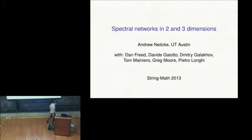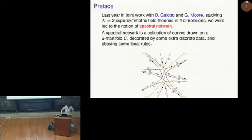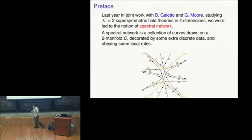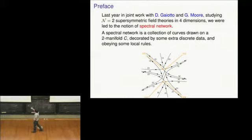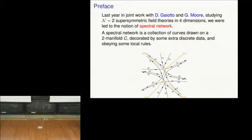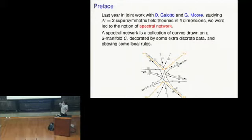So what is the subject? Last year, in joint work originally with Davide Giotto and Greg Moore, as part of a long-running collaboration, we've been studying N equals two supersymmetric field theories in four dimensions. In the process of that study — a question from physics — it led to some mathematical geometric construction, which is this notion of spectral network.